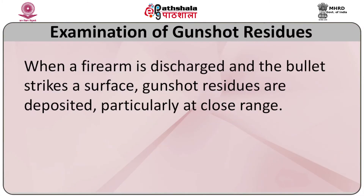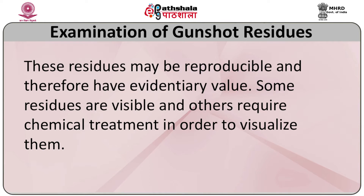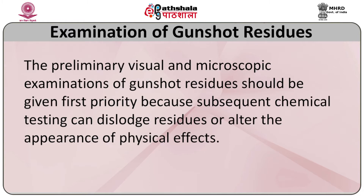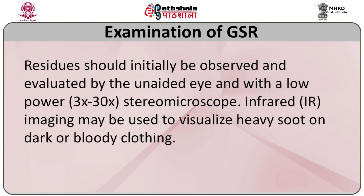When a firearm is discharged and a bullet strikes a surface, gunshot residues are deposited particularly at close range. These residues may be reproducible and therefore have evidential value. Some residues are visible; others require chemical treatment to visualize them. Primary visual and microscopic examination should be given first priority, as subsequent chemical testing can dislocate residue or alter the appearance of physical effects. Residues should initially be observed with the unaided eye and with low-power magnification (3x to 230x). Stereomicroscopic infrared imaging may be used to visualize heavy soot on dark or bloody clothing.